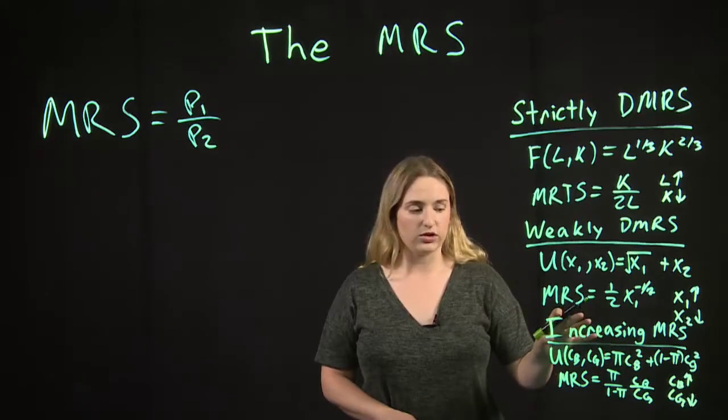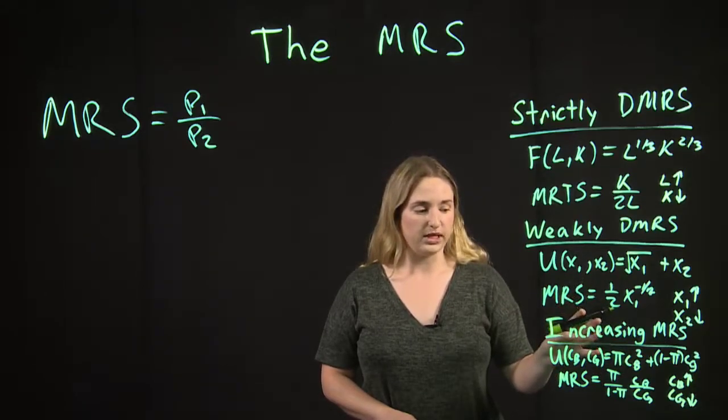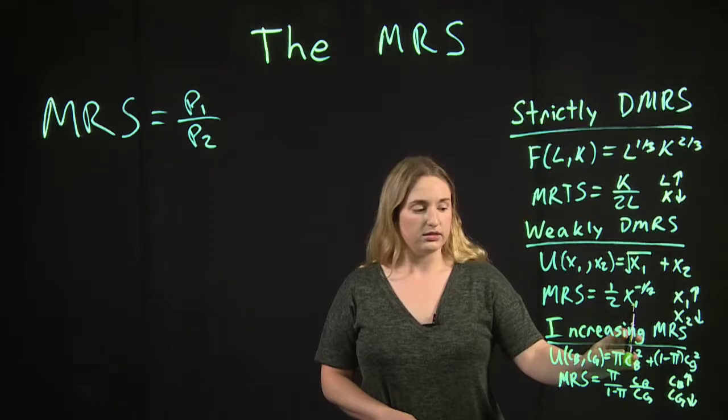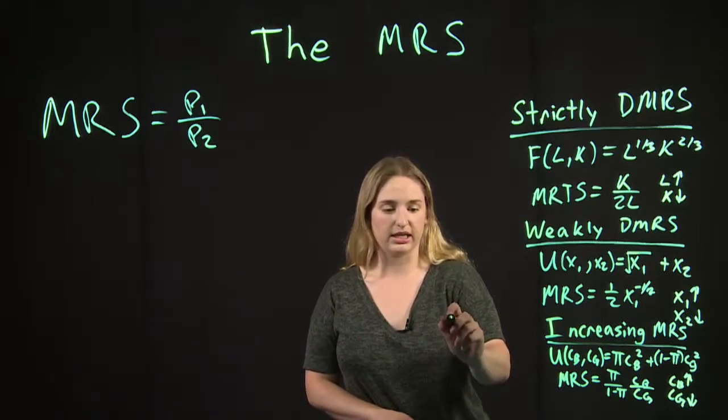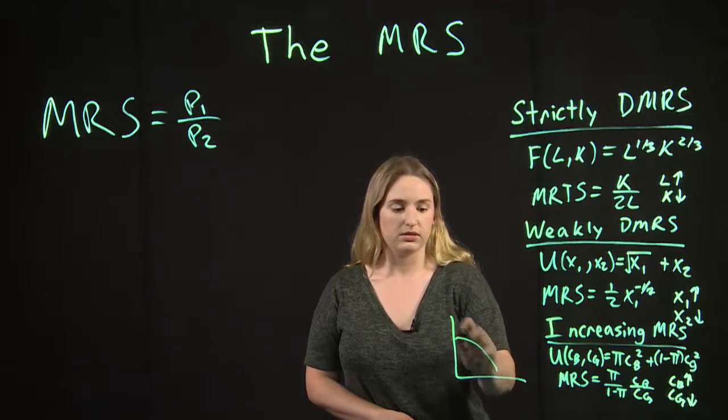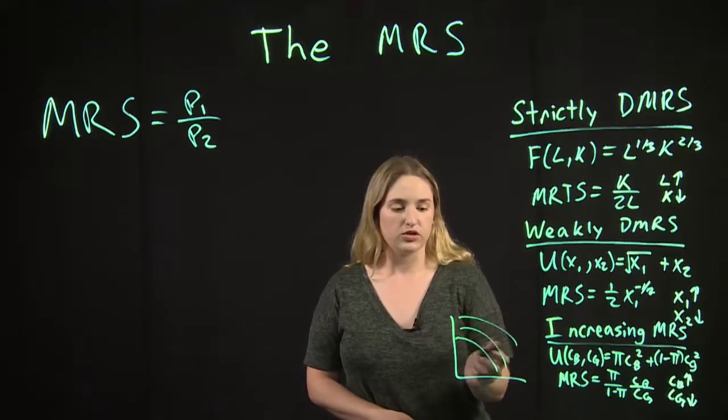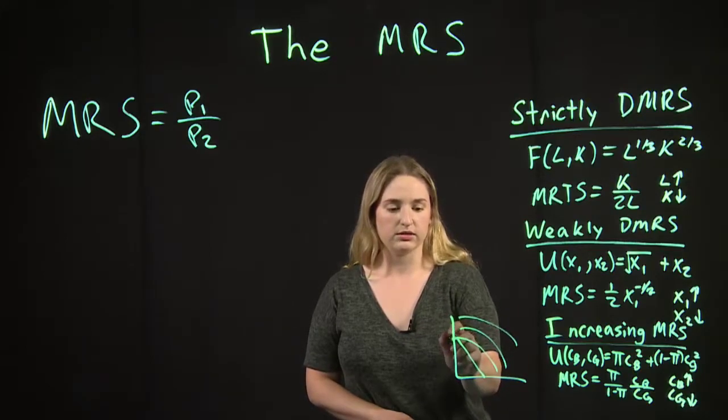We only have a corner case. So that corner case would be, the indifference curves would look a little bit like this. So the optimal solution would be at a corner such as this.